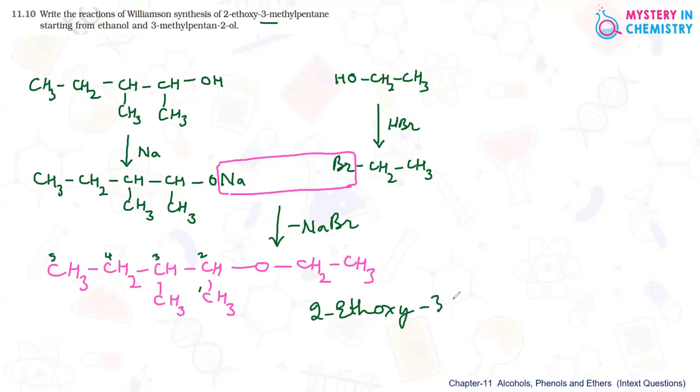Third carbon is having methyl group. So, it is 3-methyl. Then pentane. Pentane. 5 carbon atoms total. So, this is how we are getting the final compound.